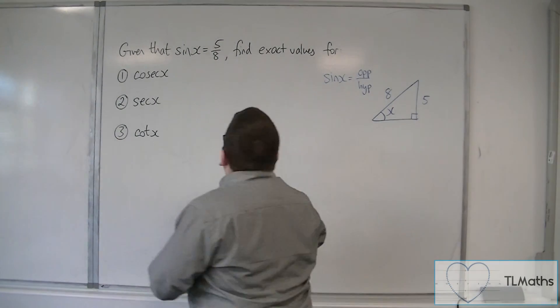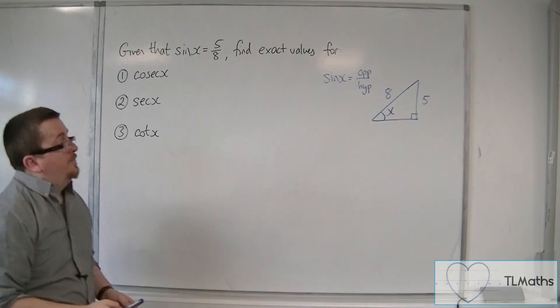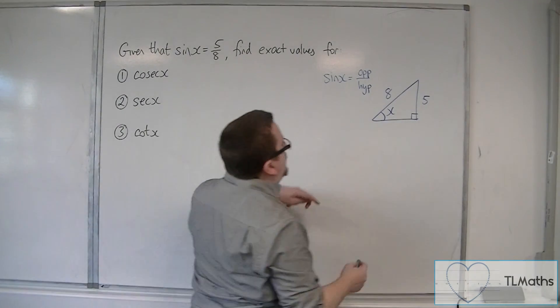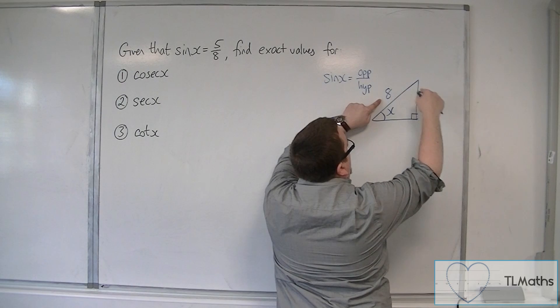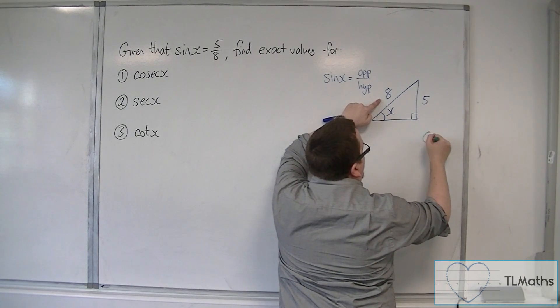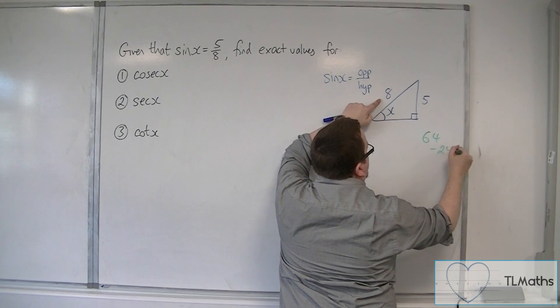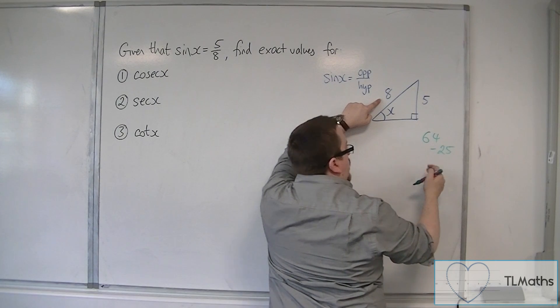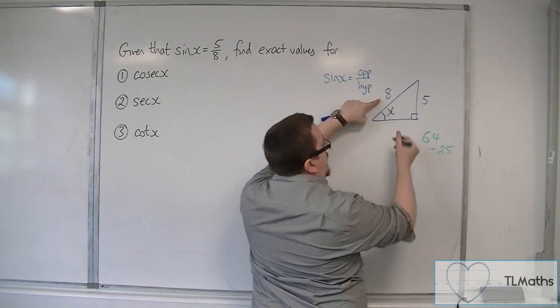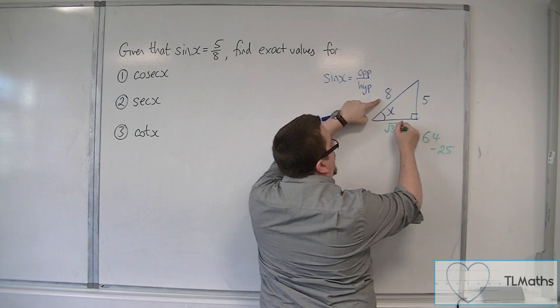So all we need to do is work out the adjacent. So 8 squared is 64, take away 25, which will get us down to 39, and so this is root 39.